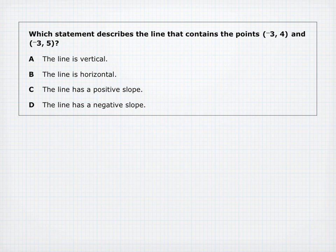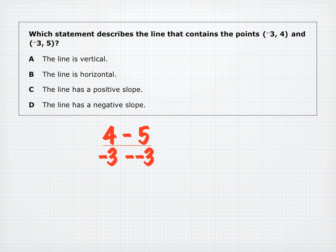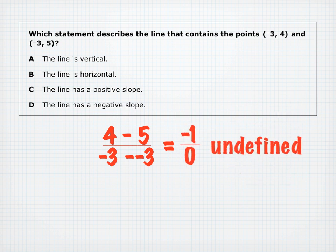Which statement describes the line through (negative 3, 4) and (negative 3, 5)? Using the slope formula: (4 minus 5) over (negative 3 minus negative 3) equals negative 1 over 0, which is undefined. An undefined slope means a vertical line. You could also simply plot the points — both have X equals negative 3 — and see the vertical line directly.